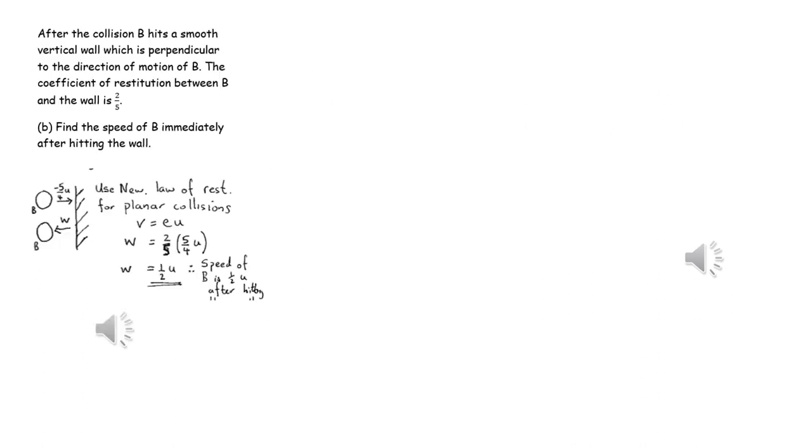To find the speed of B after it's hit the wall, we apply Newton's law of restitution or Newton's experimental law, so V equals EU, and we can work out the speed that B comes away from the wall at.